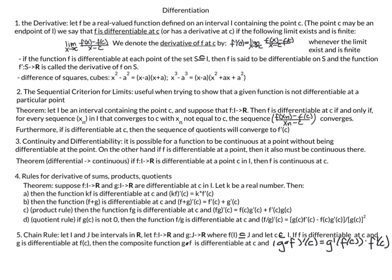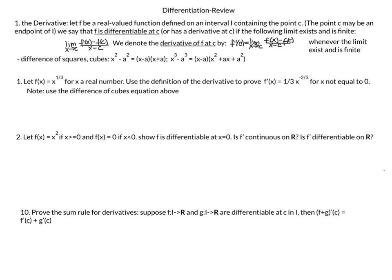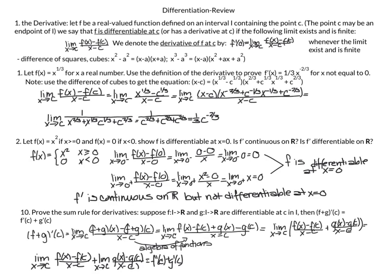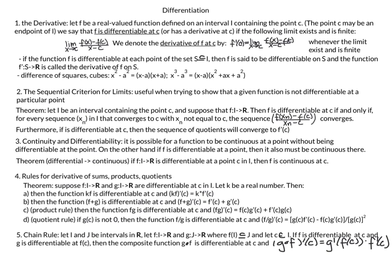Quick review: we looked at the formal definition of a derivative at a point C, the difference of squares and cubes formula and its generalization, sequences as a tool for determining differentiability, and the relationship between continuity and differentiability — differentiability implies continuity but not the converse. We also covered the rules for derivatives of sums, products, and quotients, and the chain rule. Three practice problems are provided — pause the video to try them, then review the solutions on the next slide.